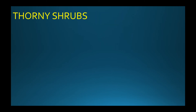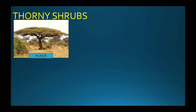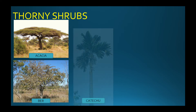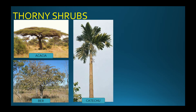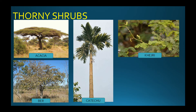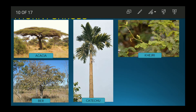Let us look at the shrubs. First is Acacia. Second is Ber, also called Bor. Then Katechu, which is like a palm tree, followed by Khejri and Aloe Vera.